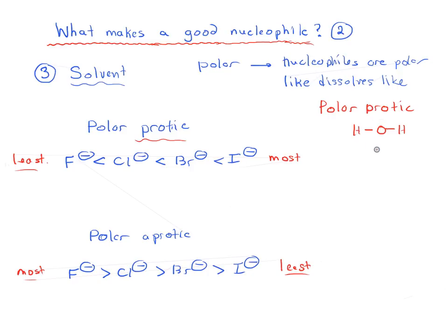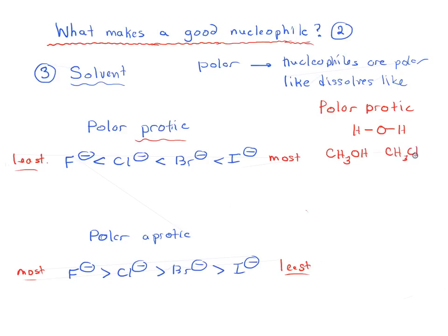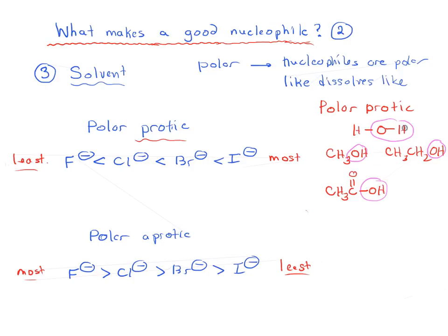For example, water (H₂O) is the most commonly discussed polar protic solvent, and it has an OH group — it actually has two OH bonds. Another example would be methanol, and another would be ethanol. We could also have acetic acid (CH₃C=O, OH), also a polar protic solvent. They each have an OH group. The H is the proton, and they're able to donate this proton under different conditions. But most importantly for our purposes, these types of solvents can participate in hydrogen bonding.